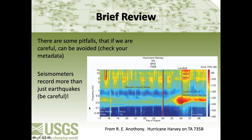Here's an example spectrogram from Rob Anthony, where the horizontal axis is the day of August and the vertical axis is frequency. We're looking at Hurricane Harvey's swell off the coast on TA station 735B. We can see a few earthquakes, diurnal cultural noise, then the swell of Hurricane Harvey, and when Hurricane Harvey hits shore, a whole bunch of wind noise coming in on the instrument. This is another example of recording non-earthquake signals that can be counterintuitive at first glance.